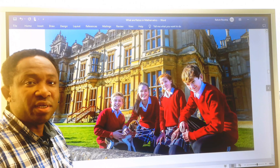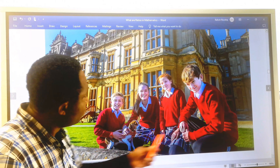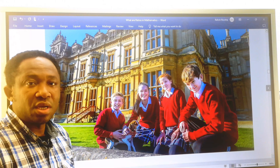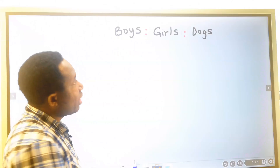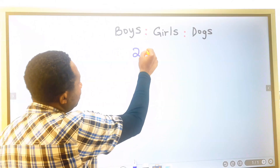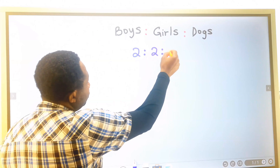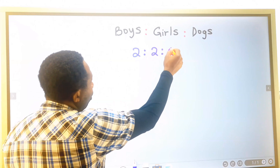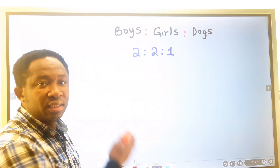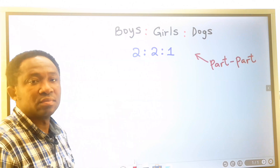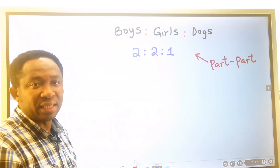Here we have a picture of a dog, two boys, and two girls. We have two boys to two girls to one dog. This ratio is a part-to-part ratio.